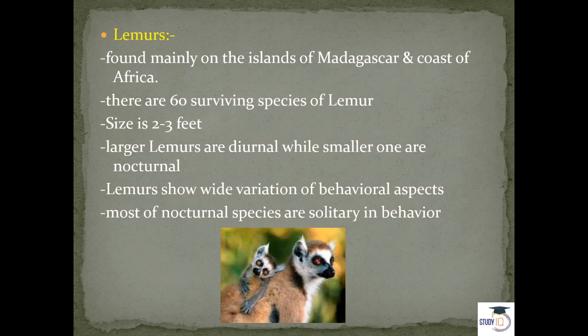Let's talk about lemurs first. Lemurs are mostly found on the islands of Madagascar and the coast of Africa. There are 60 surviving species of lemurs that still exist. Lemurs are small in size, about 2–3 feet. Larger lemurs are diurnal while smaller ones are nocturnal — smaller lemurs can see easily at night, while larger ones see well in daytime but not at night. As they grow older, seeing at night becomes more difficult for them.